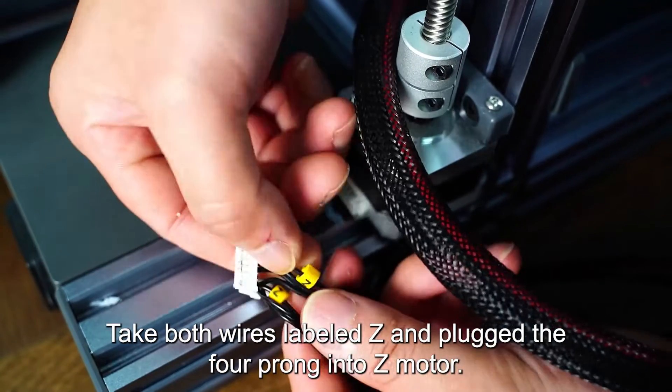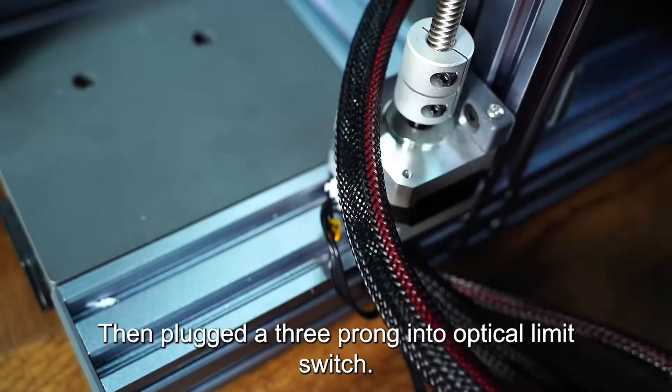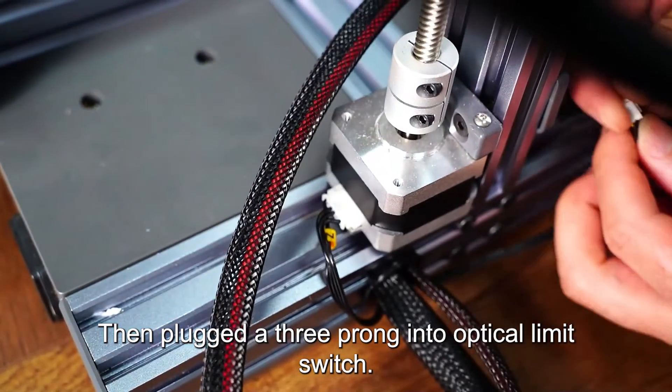Take both wires labeled Z and plug the four prong into Z motor. Then plug the three prong into optical limit switch.